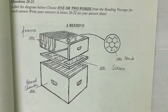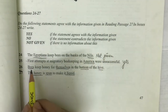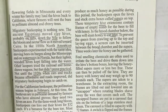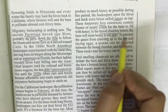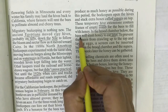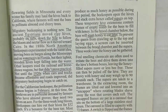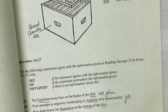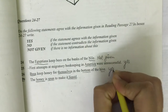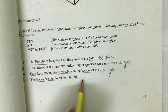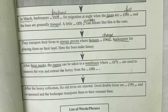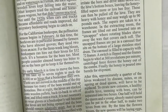We have now fully labeled the diagram. Going back to the Yes/No/Not Given question: 'Bees keep honey for themselves in the bottom of the hive.' The passage says: 'The bees will stash honey to eat later.' This confirms the statement, so the answer is 'Yes.' The next pending question is: 'The honey is spun to make it liquid.' Keywords are already highlighted, so we return to the passage.